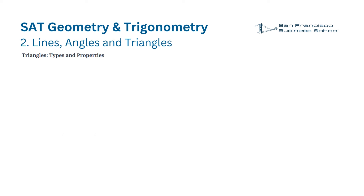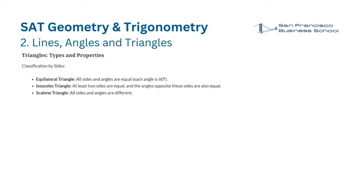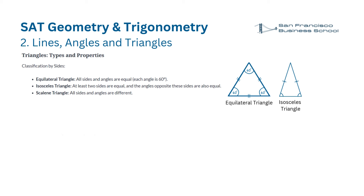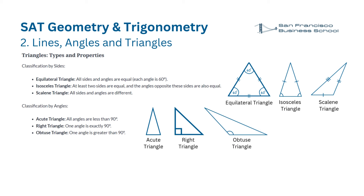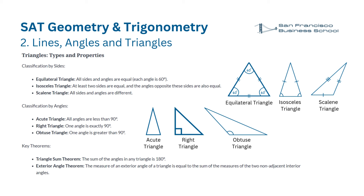Triangles — Types and properties. Classification by sides: equilateral triangle (all sides and angles equal, each 60 degrees); isosceles triangle (at least two sides equal, angles opposite those sides also equal); scalene triangle (all sides and angles different). Classification by angles: acute (all angles less than 90 degrees), right (one angle exactly 90 degrees), obtuse (one angle greater than 90 degrees). Key theorems: the sum of angles in any triangle is 180 degrees. The exterior angle equals the sum of the two non-adjacent interior angles.